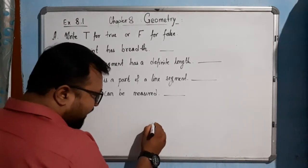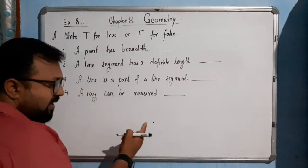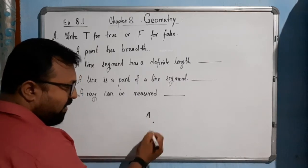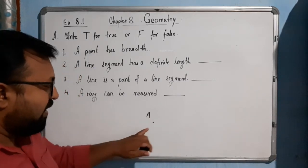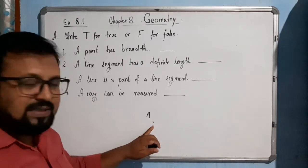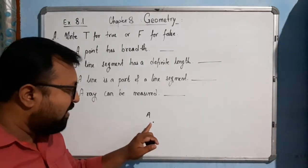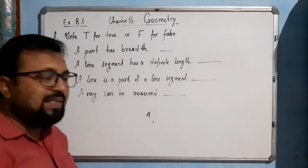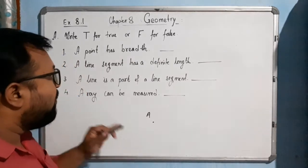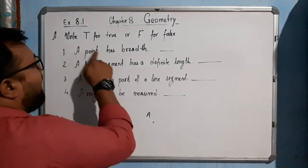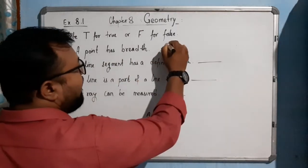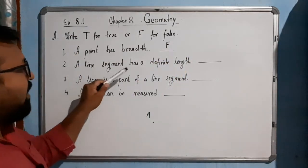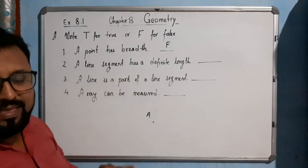If I put a dot here — point A — is there any length, breadth, or height? We can't measure the length, breadth, or height of this point with the help of a scale. So there is no breadth. Therefore, 'a point has breadth' is a false statement. I will write false.